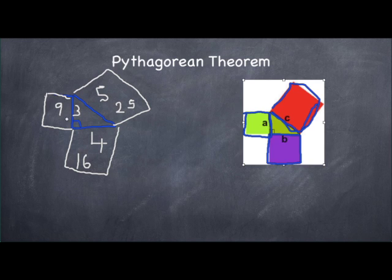Now think about this: 9 plus 16 is 25. How amazing is that? One side squared plus the other side squared equals the hypotenuse side squared. That's what this is called—this side is called the hypotenuse, which is really amazing.